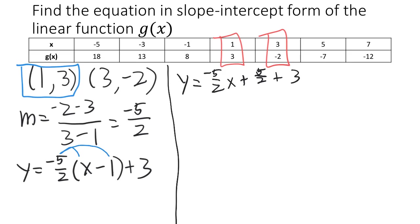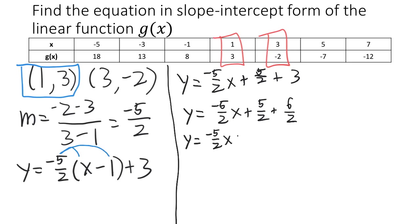Negative 5 over 2 times negative 1 is positive 5 over 2, plus 3. Now it's just a matter of adding 5 over 2 plus 3. Since 3 is the same as 6 over 2, when we add we end up with y equals negative 5 over 2 x plus 11 over 2. Now we have the slope-intercept form of our line. But again, notice we were given the name g(x) for our function, so our answer is g(x) equals negative 5 over 2 x plus 11 over 2.